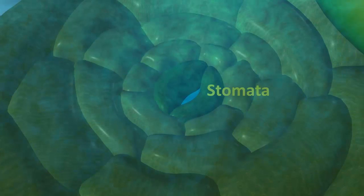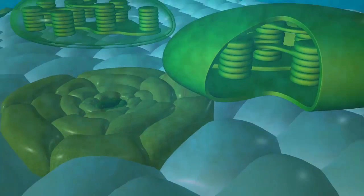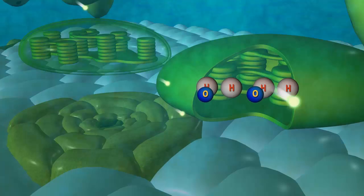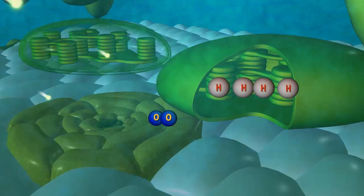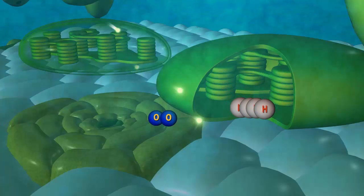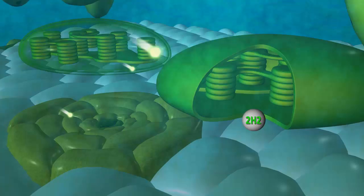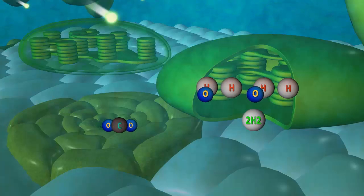Stomata: Leaves of plants have openings in the lower surface called stomata. Stomata is the place where carbon dioxide required for photosynthesis is absorbed. Excess oxygen produced during photosynthesis is released through stomata.